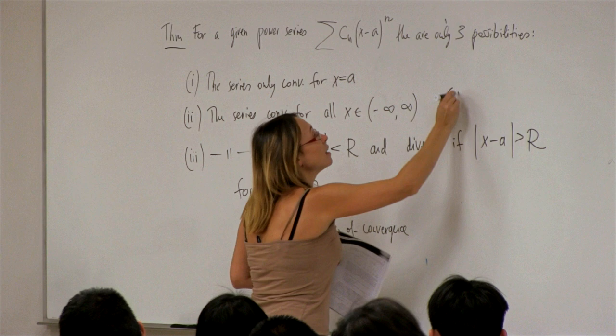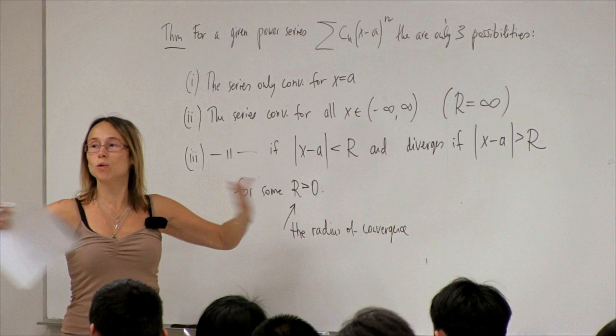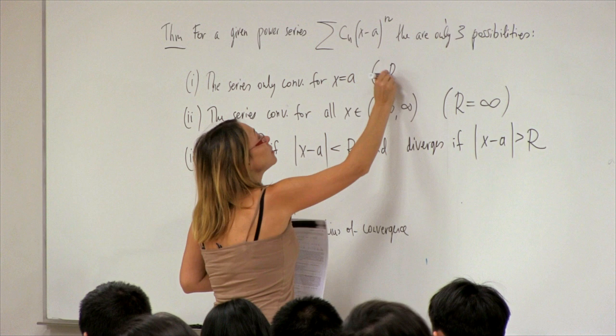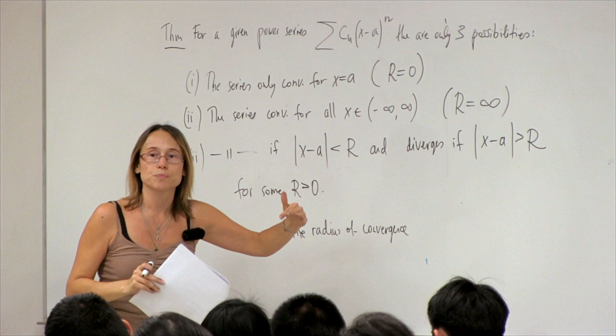When the series converges for all x, we can say r is infinity. When it only converges at the center, r equals 0. So only at the center does it converge, and nowhere else.